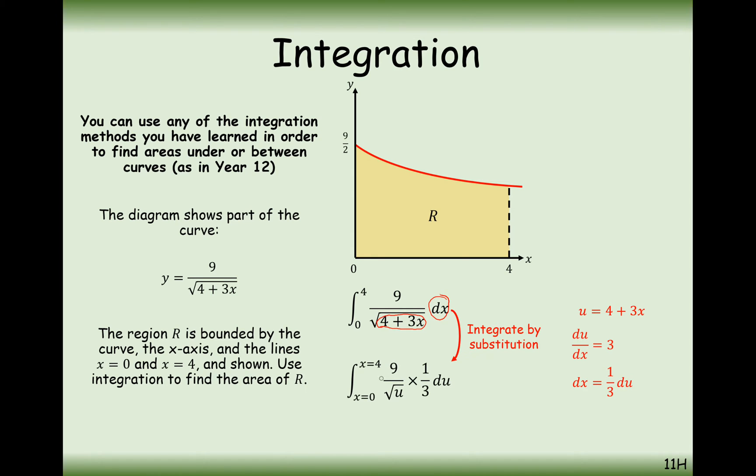In this case, it's going to turn into 9 over the square root of u times a third du. But now remember that our boundaries are the next part of this problem that we're going to have to change using our substitution. At the moment, these are x-coordinate boundaries, x equals 0 to x equals 4. If we want to integrate with respect to u, we're going to have to change these boundaries into something with respect to u.